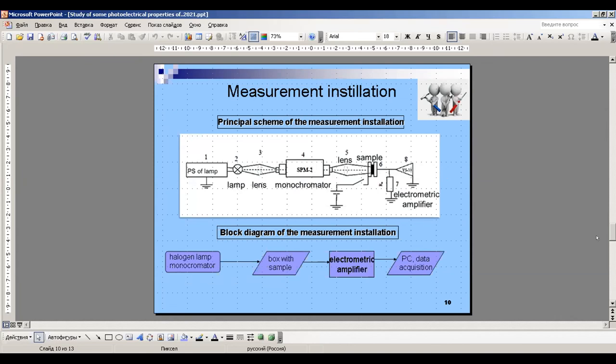And the block diagram of the measurement installation with the main blocks: the halogen lamp, monochromator, box with our sample, electromagnetic amplifier with special software connected with computer with data acquisition.